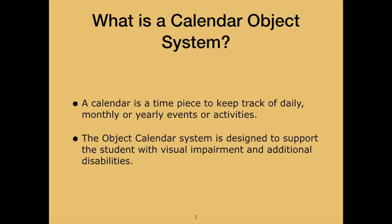A calendar is defined as a method to set the divisions of a day, week, month, and year, and set the beginning and ending of an event. We use calendars regularly to organize our lives and mark our daily home, work, or school schedules, and special events or holidays.